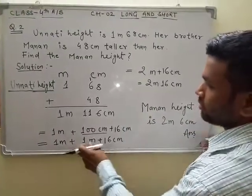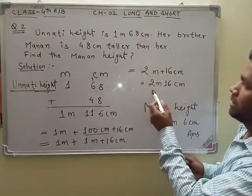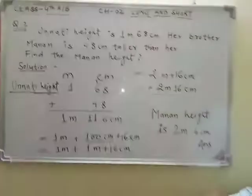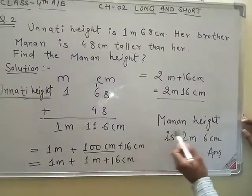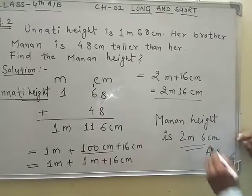add them, the total height become 2 meter plus 16 centimeter. Then we can write them 2 meter 16 centimeter. So we find Manan height is 2 meter 16 centimeter.